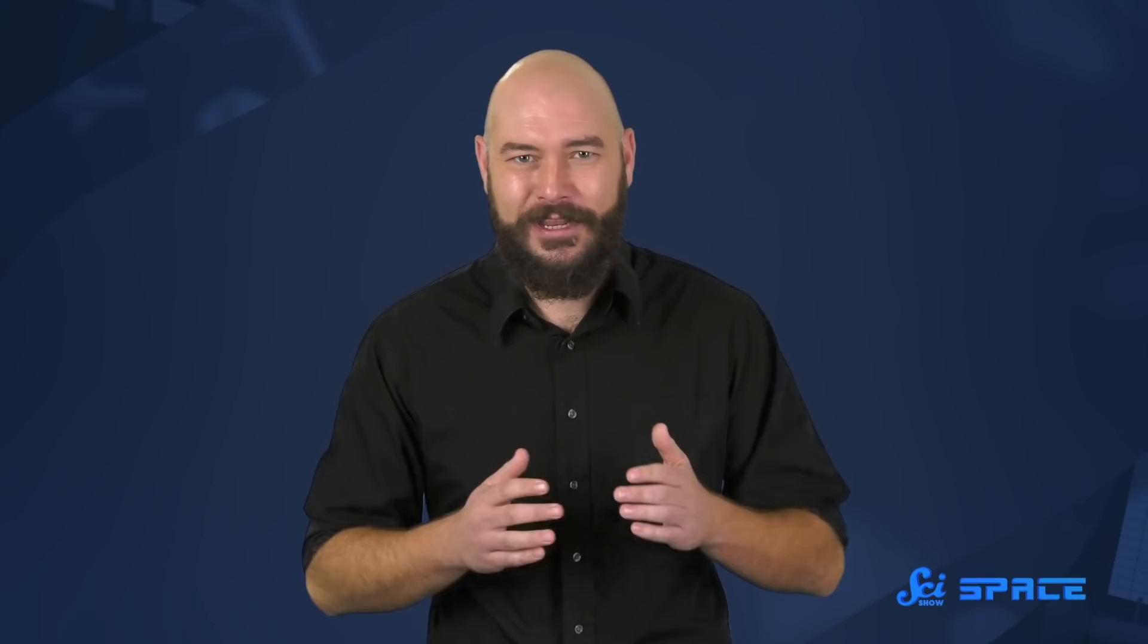And Arecibo wasn't only great at receiving radio signals, it could also transmit them with a huge radio transmitter. In 1974, right after the dish upgrade, it famously used this transmitting ability to send a binary message to outer space, saying who we are and where to find us.